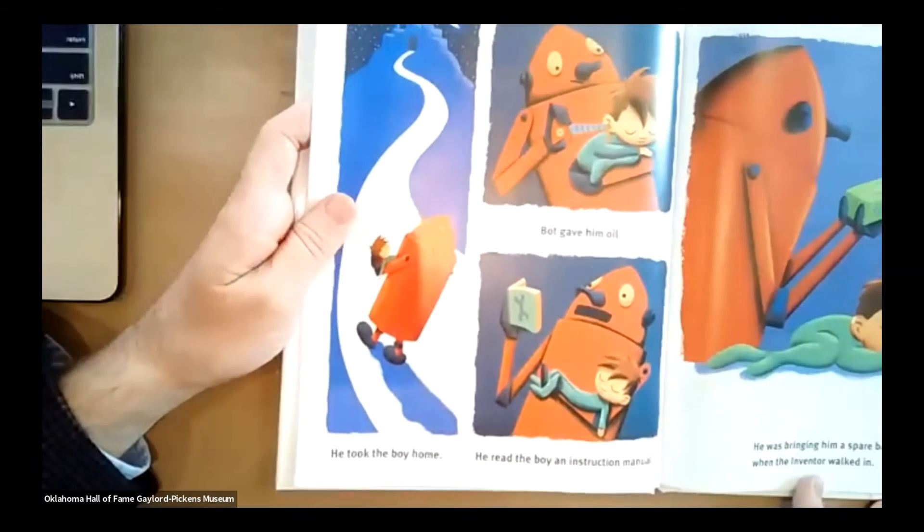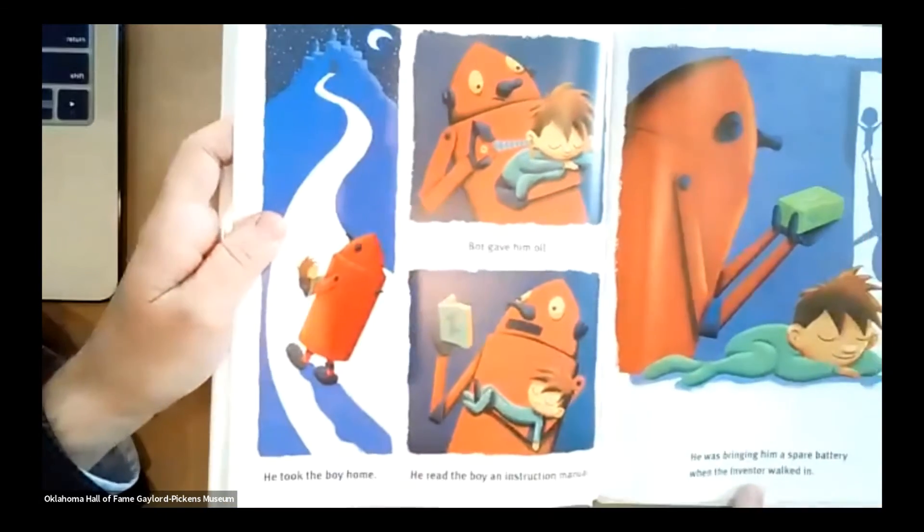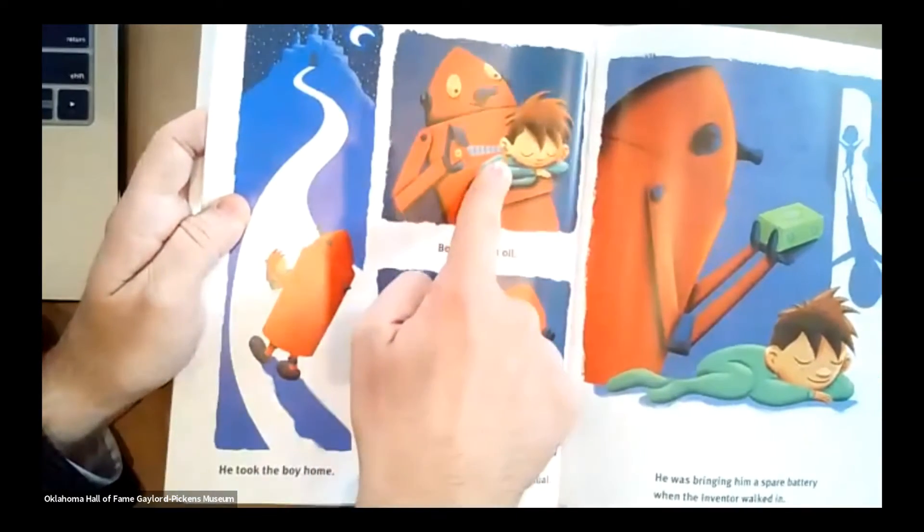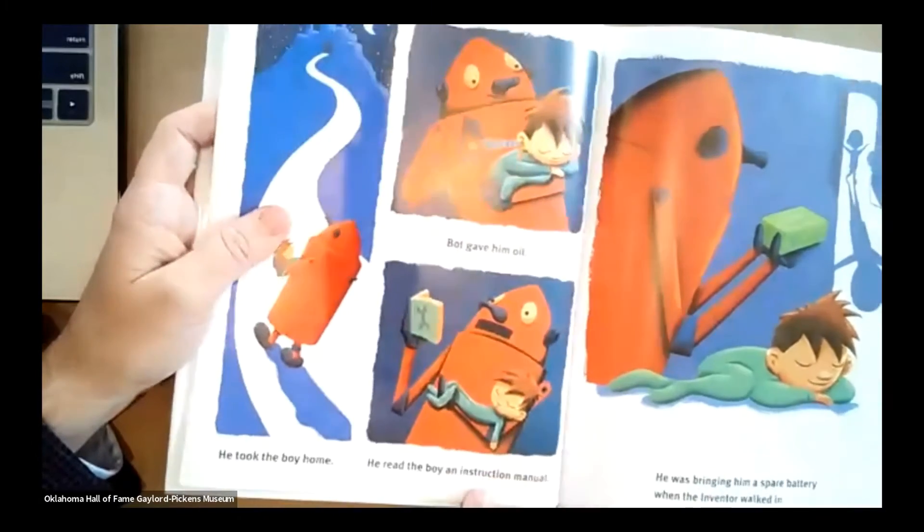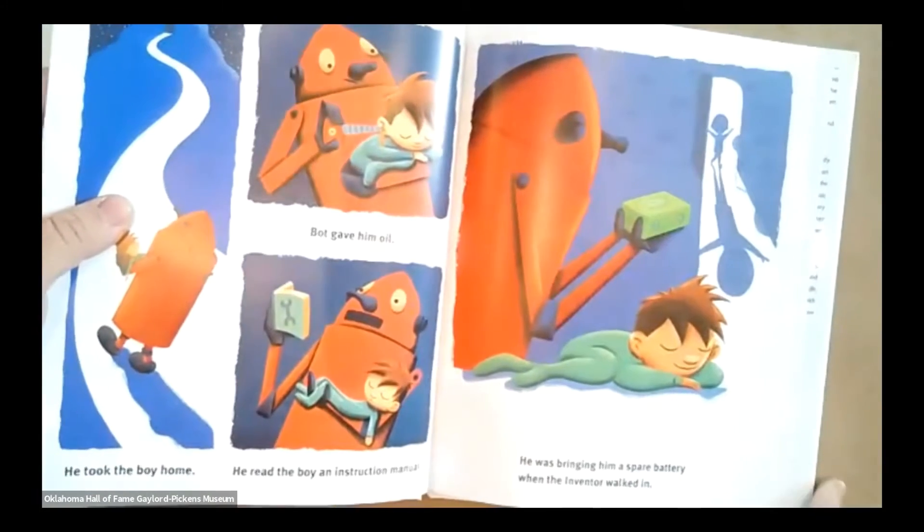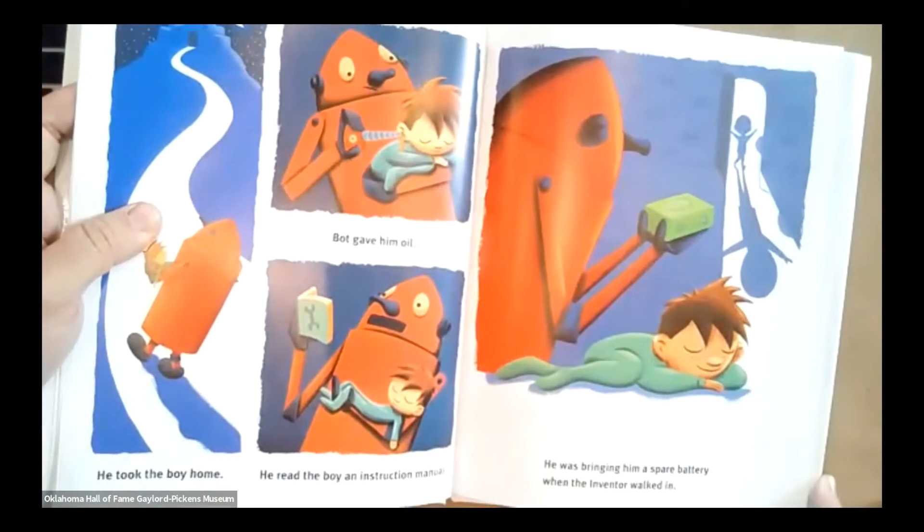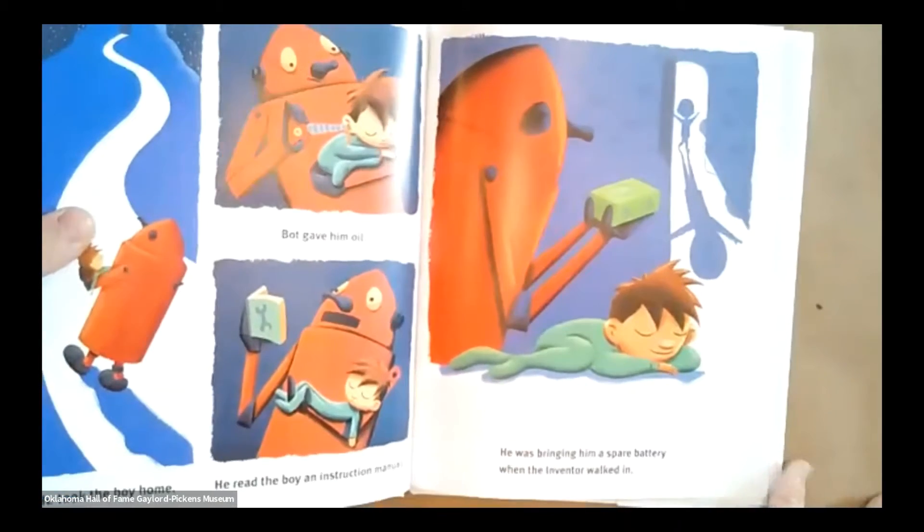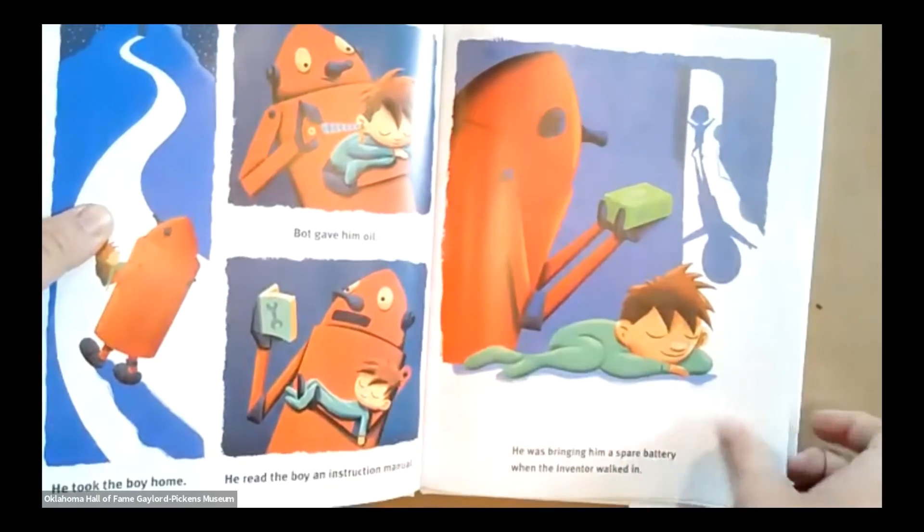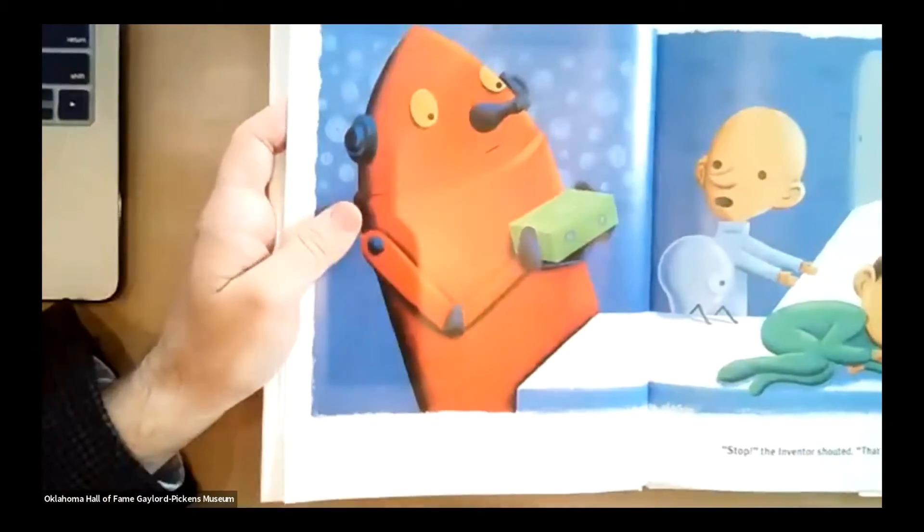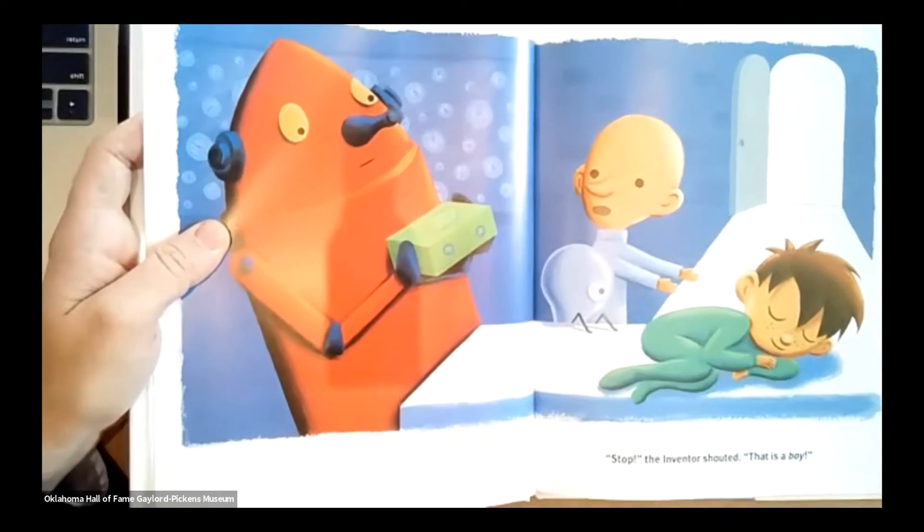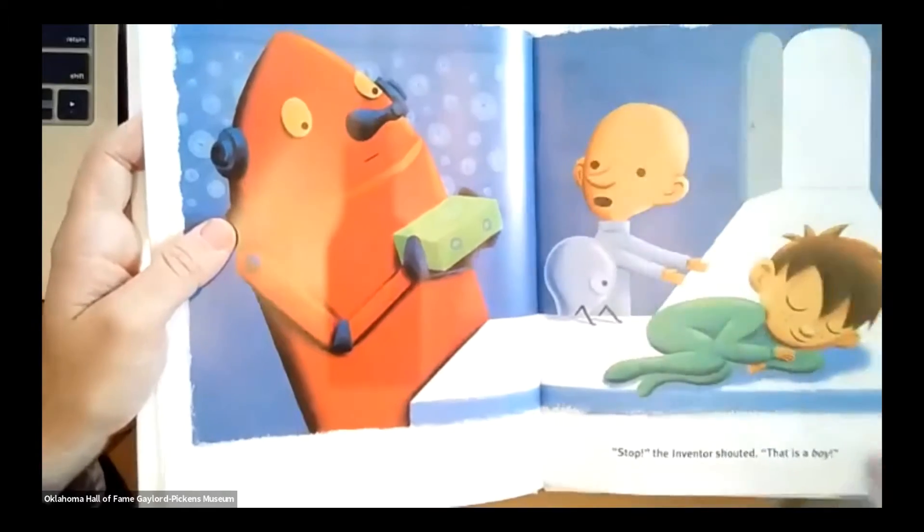Well, he took the boy home. Bot gave him oil. See? Right in his ear. He read the boy an instruction manual. He was even bringing him a spare battery when the inventor walked in. Bot. What do you think he was going to do with the battery? Think he was going to try to charge him or something? Stop, the inventor shouted. That is a boy. Just in time.